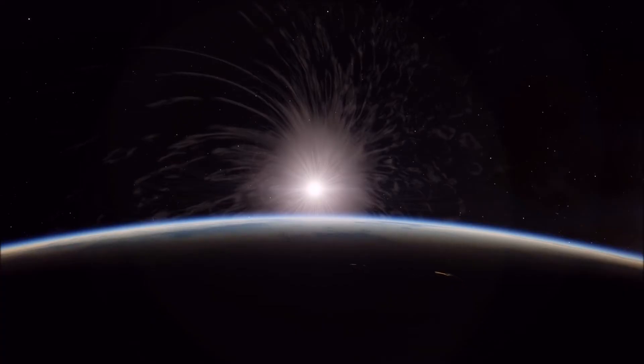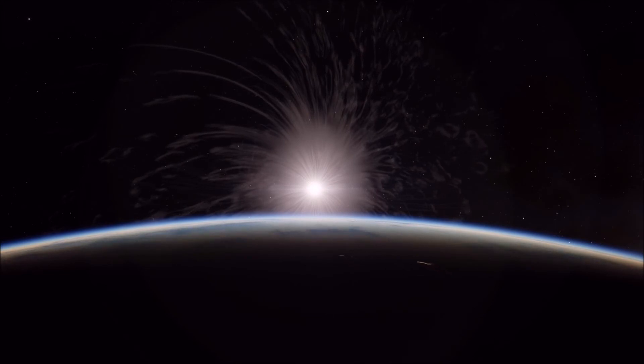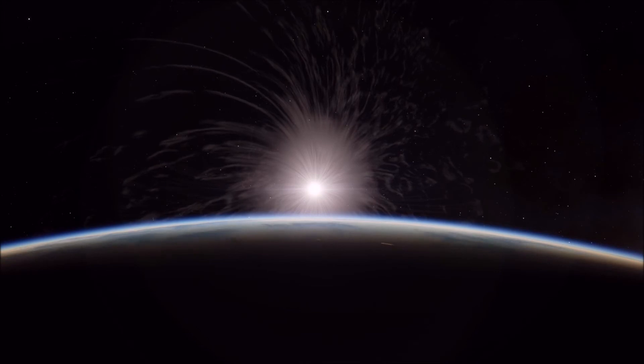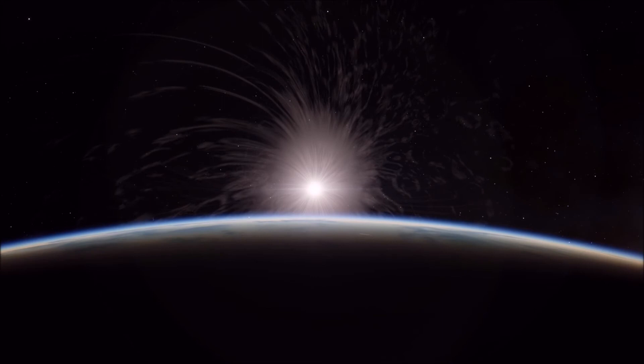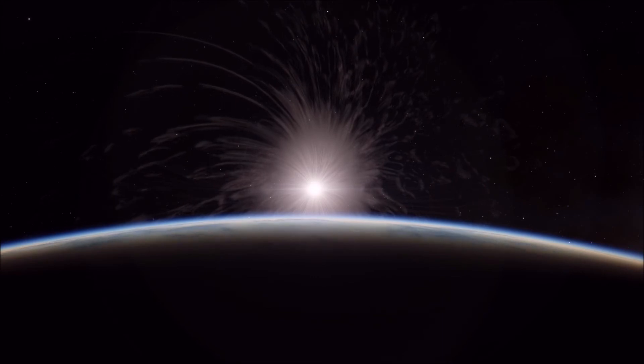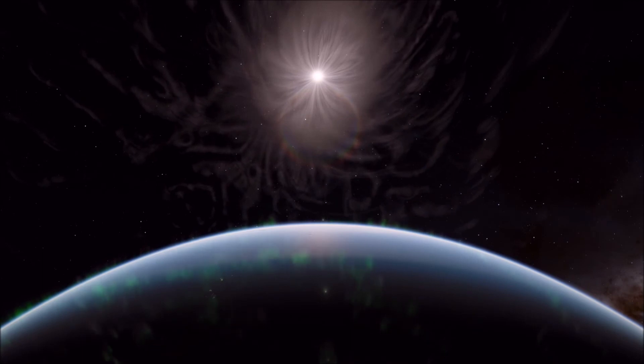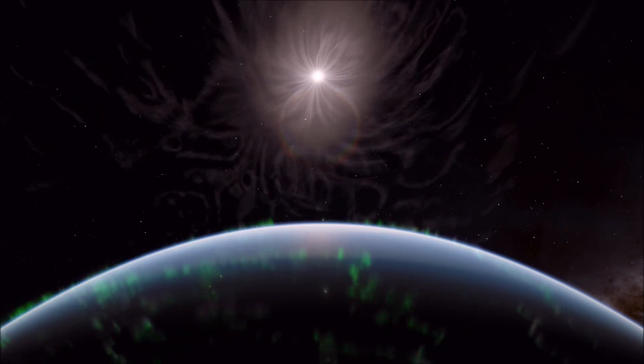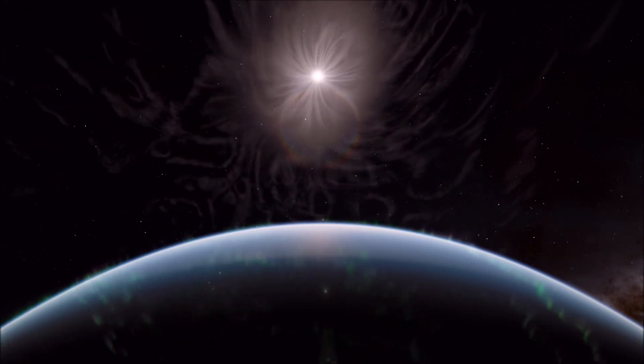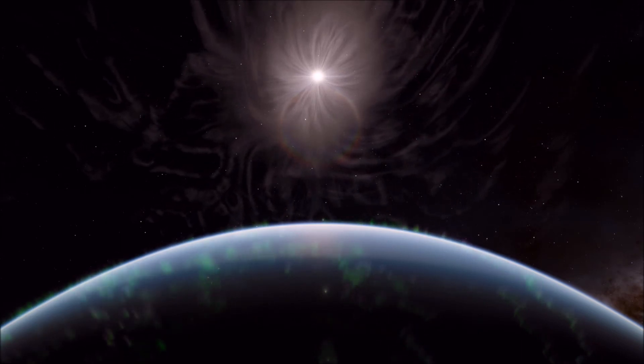9am. The sun has started to become partially obscured by what appears to be a shell of gas expanding outwards. Panic begins to ensue as there is no media coverage or government statement explaining what is happening. 12pm. The cloud around the sun has expanded and obscured it further. To observers, it looks as if the sun has exploded. There is widespread disorder.